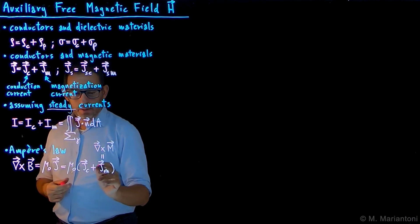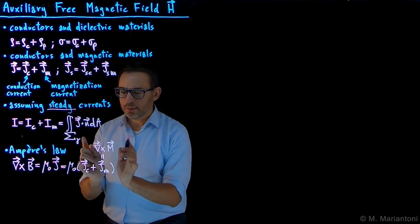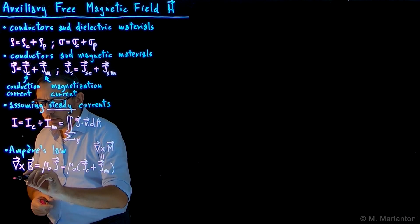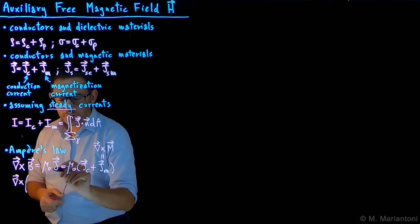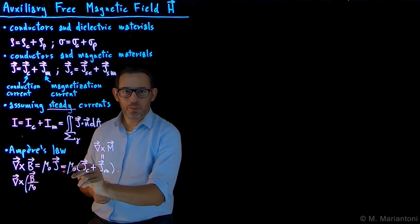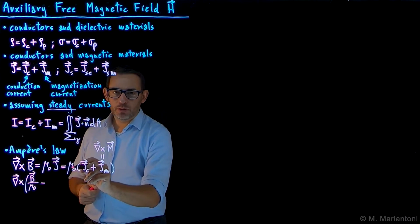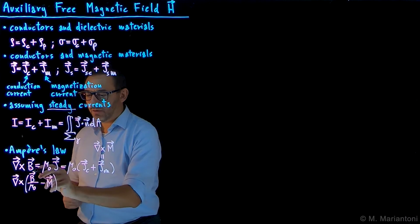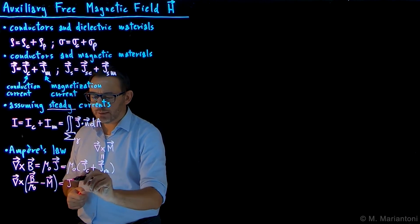We obtain the curl of B divided by μ₀ minus M — because we have two curls, we can take the curl of M to the left-hand side and factor out the curl operation. So we obtain the curl of the quantity B divided by μ₀ minus M. Only B gets divided by μ₀. This has to be equal to just Jc.